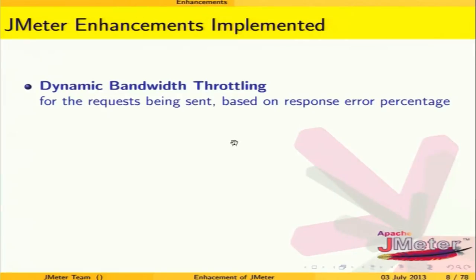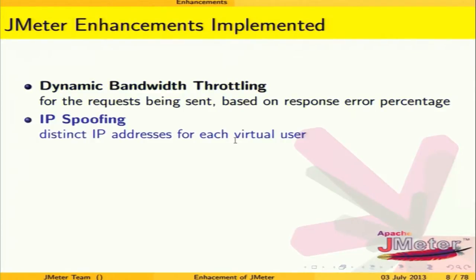The first enhancement is dynamic bandwidth throttling. We realized that bandwidth would be different for various users trying to use an application. We created a dynamic bandwidth throttling element that dynamically changes the bandwidth based upon the response and errors — when the error decreases, the bandwidth is again raised. This is one of the enhancements done.